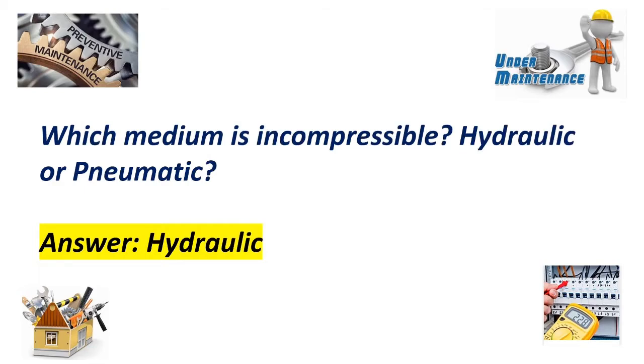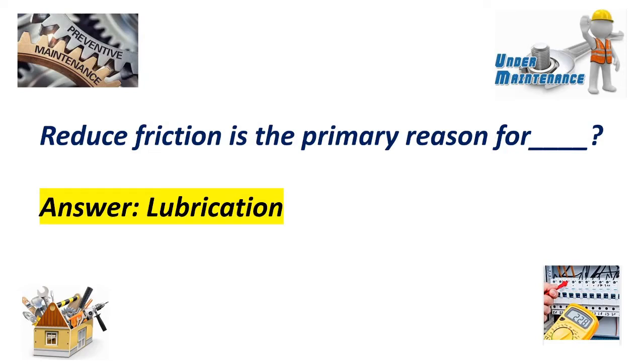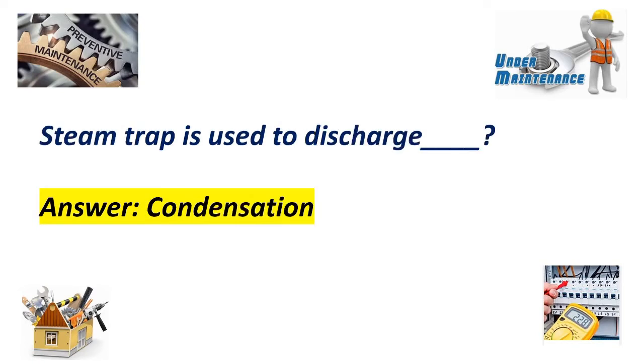Which medium is incompressible, hydraulic or pneumatic? Answer: Hydraulic. Reduced friction is the primary reason for lubrication. What is NPT stand for? Answer: National pipe thread. Steam trap is used to discharge condensation.